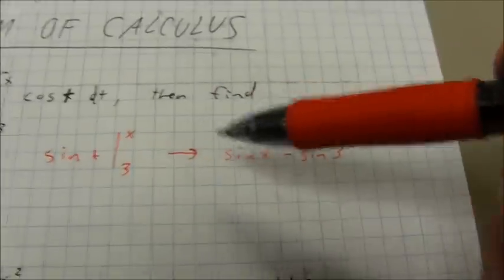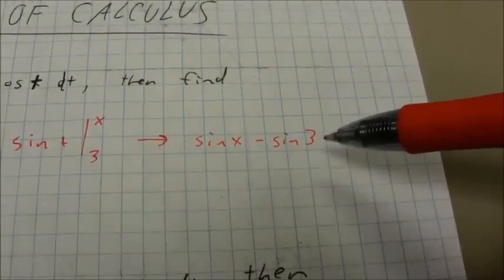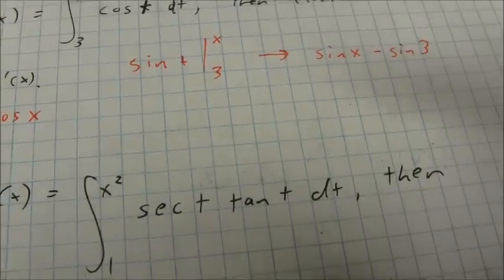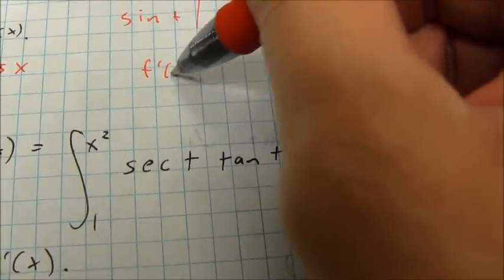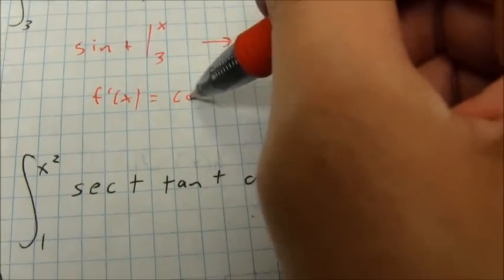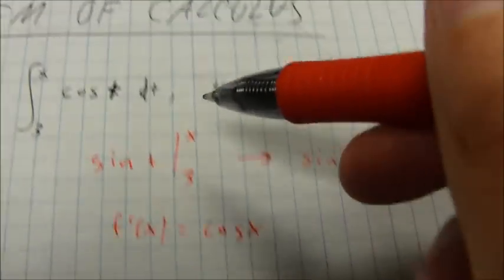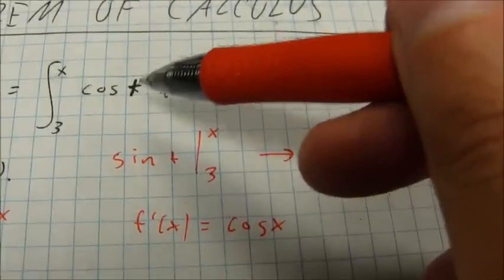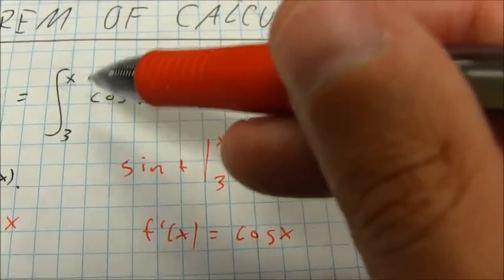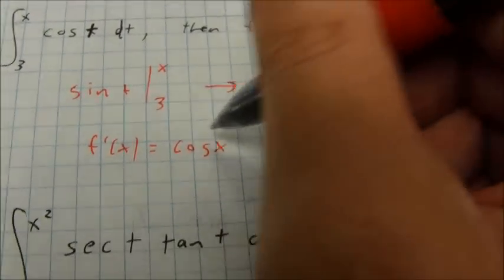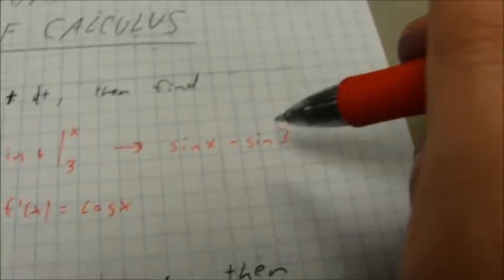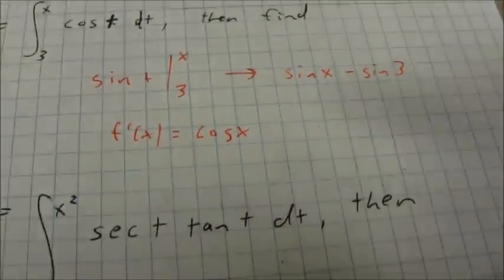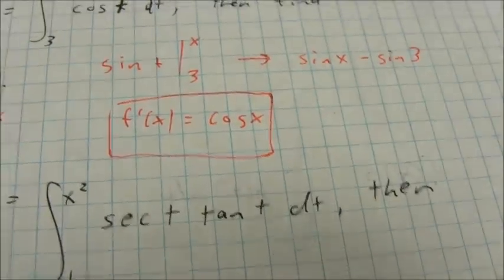All I've done here is taken this function and written it into a different form. If I wanted to graph and see what it looked like, I could graph this. I now need to find the derivative of that function. So f prime of x is going to be the derivative of sine of x, which takes me back to cosine of x — which is why I end up getting the same thing that I had in the original function, except it's in terms of x. And sine of 3 is a constant, so the derivative of a constant is just 0, and I'm left with cosine of x.